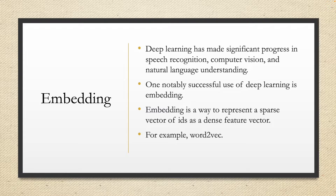Let's understand what embedding is. Deep learning has made significant progress in speech recognition, computer vision, and natural language understanding. One of deep learning's successes is embedding. Embedding is a way to represent a sparse vector of ideas as a dense feature vector. In this way, embedding helps to reduce a large dataset into a smaller one that can be used for future calculation. For example, Word2Vec is a very famous embedding technique.